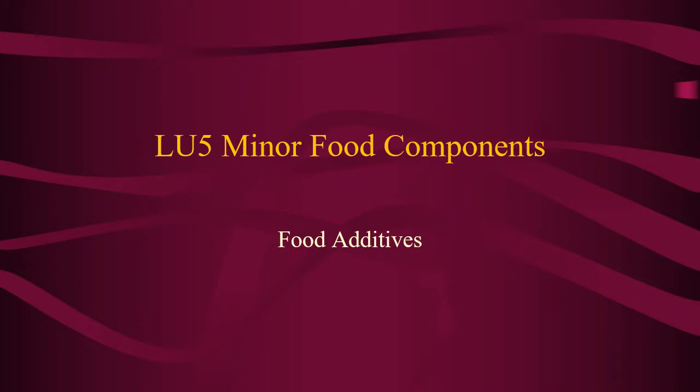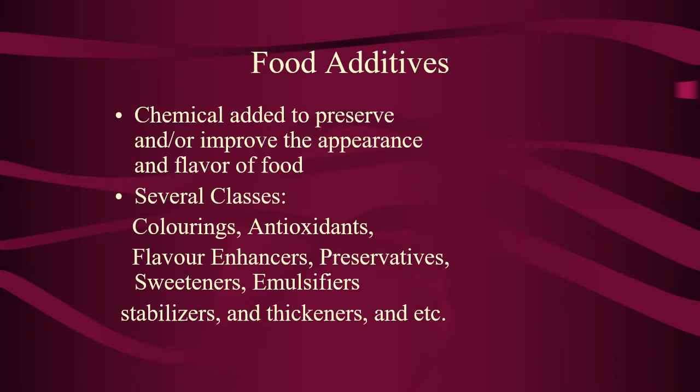In this video, I am going to explain Learning Unit 5, the main topic being minor food components, and the subtopic on food additives. Food additives are chemicals added to preserve and/or improve the appearance and flavor of foods. There are several classes of food additives, including coloring, antioxidants, flavor enhancers, preservatives, sweeteners, emulsifiers, stabilizers and thickeners, and others.